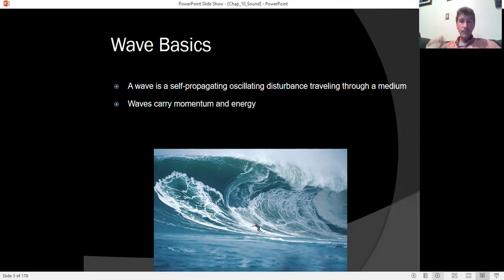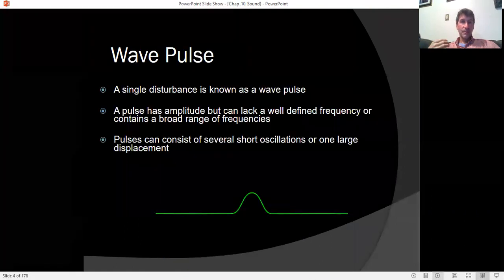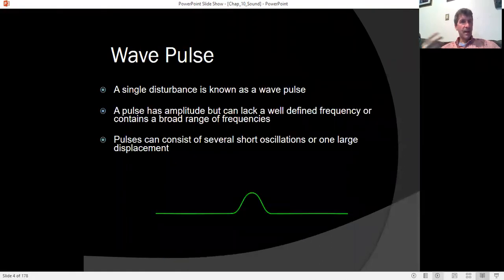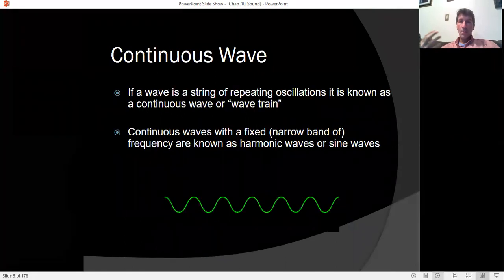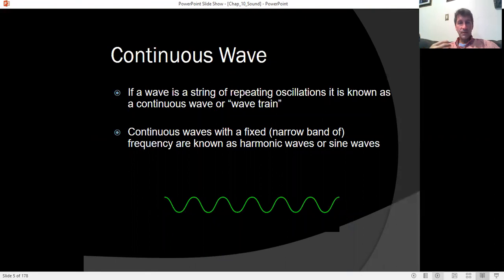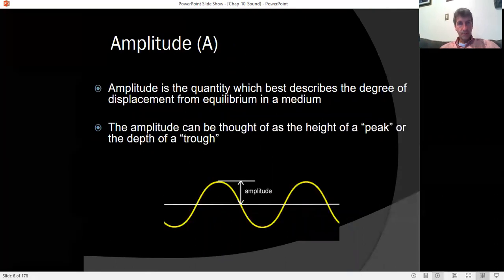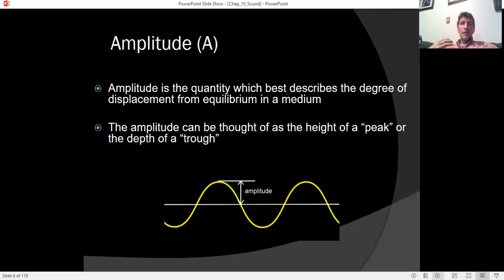Waves are disturbances that carry both momentum and energy. They can come as a single disturbance — a wave pulse — or as continuous waves that repeat themselves over and over again. In terms of describing a wave, we can describe the amount of disturbance as the amplitude.